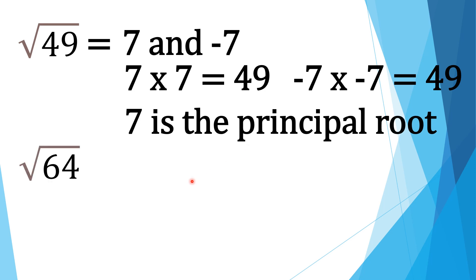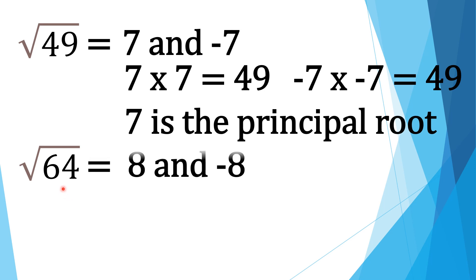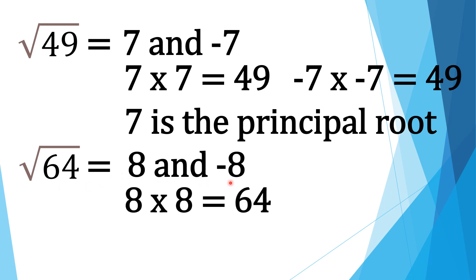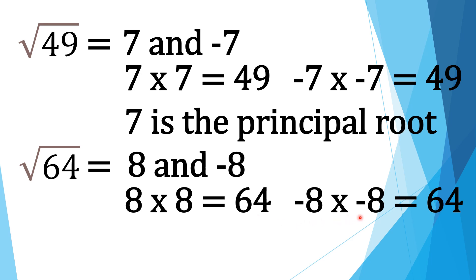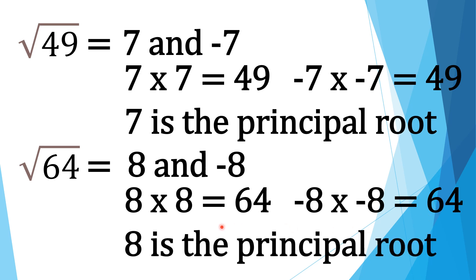Next example. What is the principal root of 64? The square roots of 64 are positive 8 and negative 8, since positive 8 times positive 8 is equal to positive 64, and negative 8 times negative 8 is equal to positive 64. Thus, 8 is the principal root.